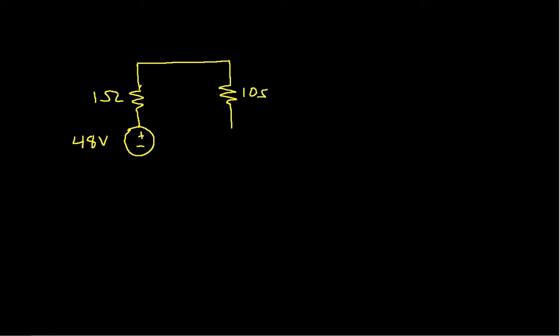Suppose that we have a circuit that looks like this. We'll have a source, and we'll arbitrarily set this at 48 volts. We'll have a resistor, which we'll set at 1 ohm. Over here we'll have another resistor, which we'll set at 10 ohms, and another source, which we'll say is 30 volts.